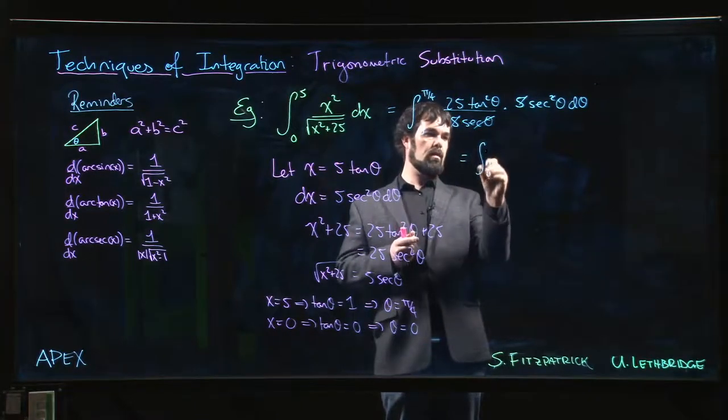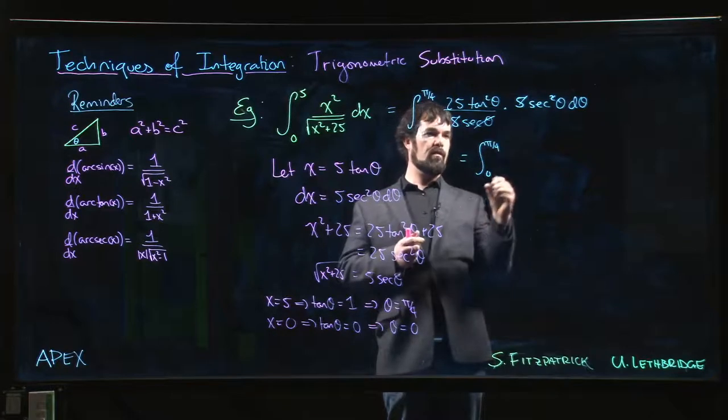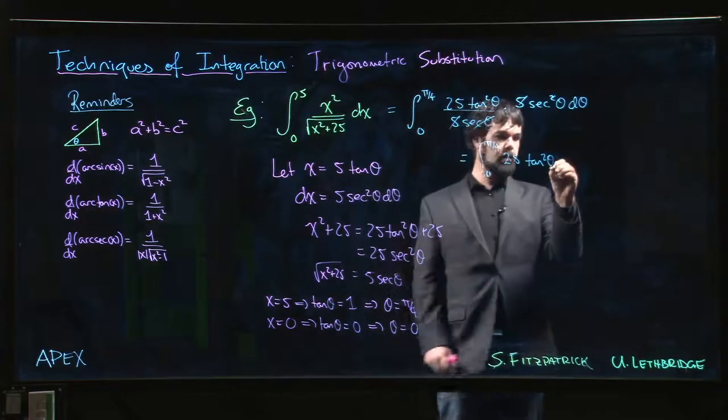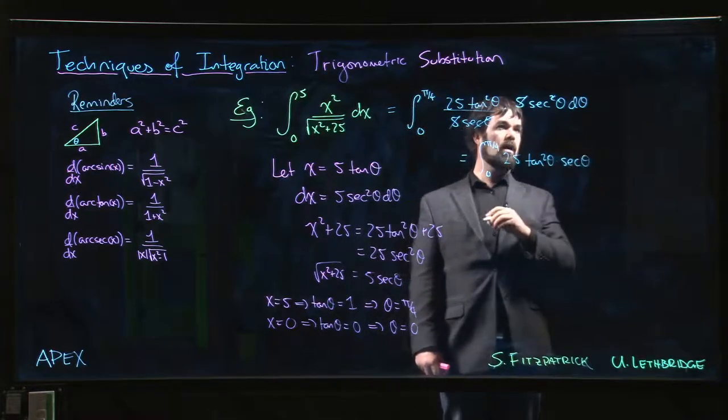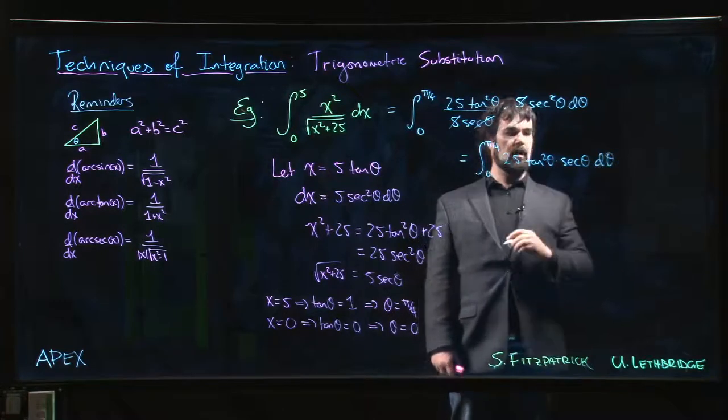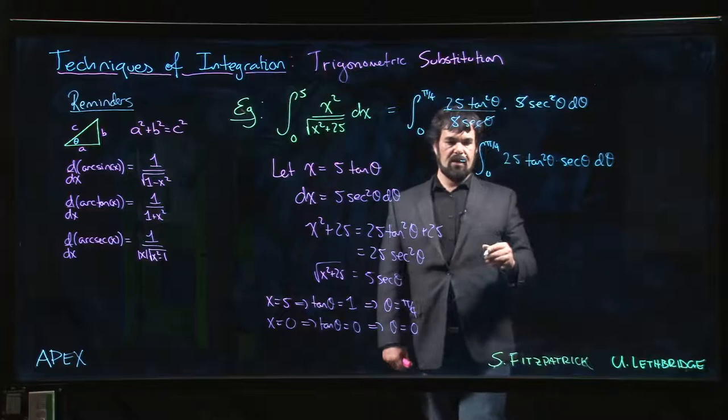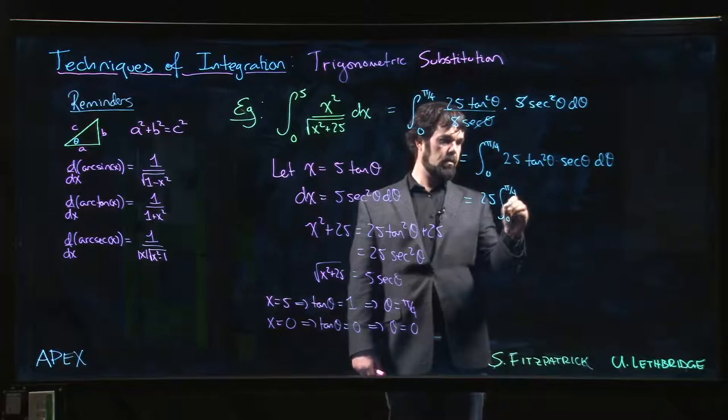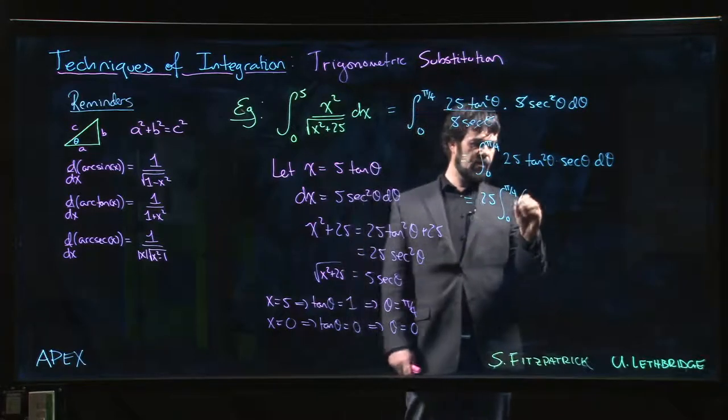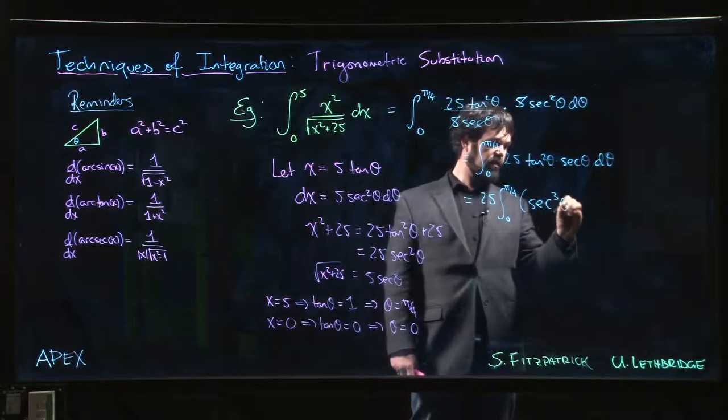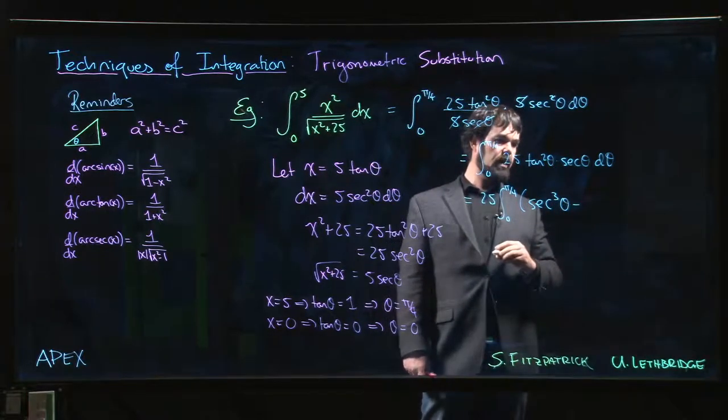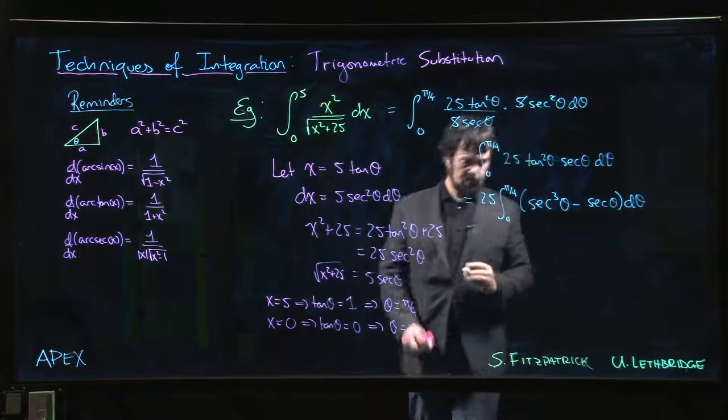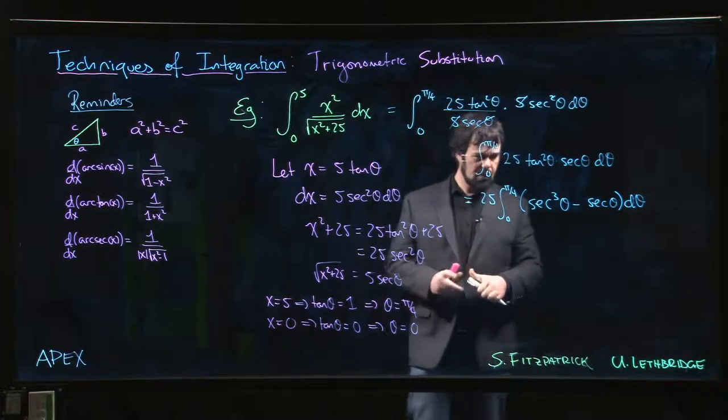So we clean this up, cancel the 5s, cancel some secant. We get the integral from 0 to pi over 4, 25 tan squared theta times secant theta d theta. Tan squared is secant squared minus 1. This is once again that same secant cubed, secant cubed theta minus secant theta d theta, we've already seen, and we're not a big fan of it.